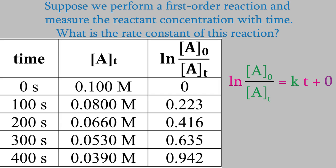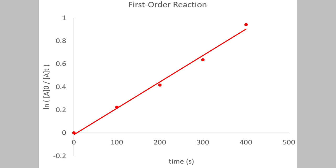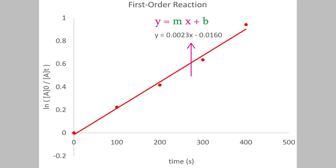We now have all the data we need. We plot time on the x-axis and the logarithm on the y-axis, which gives us this graph. If you use Excel to make the graph, it can tell you what the equation of the line is. Here's that equation — you can see it has the usual format of a straight line: y, m, x, and b. So the slope is 0.0023.